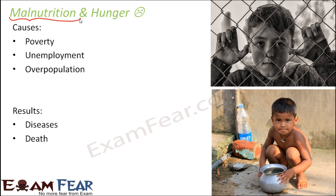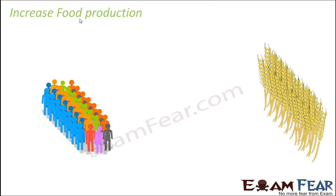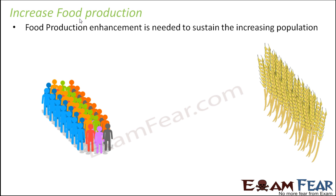So what can we do to solve this problem of malnutrition, diseases, and death? The first thing is to increase food production. Since the population is increasing so fast, we should try to increase food production to keep pace with it. But it is also important to control the population. There are family planning programs which suggest a family should have only one or at most two children.